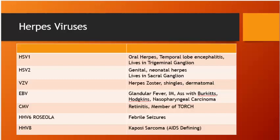Cytomegalovirus (CMV) is the most common antibody found in humans; becomes pathogenic in immunocompromised patients (chemo, radiation, HIV). Causes retinitis and is part of TORCH. In newborns, CMV causes periventricular calcification. HHV-6 causes roseola — presents with febrile seizures. HHV-8 causes Kaposi sarcoma — an AIDS-defining illness.